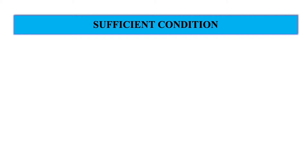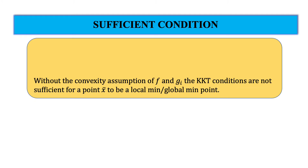Hello everyone, welcome back to the lecture series on constraint optimization problems. Till now we have seen what are the necessary and sufficient KKT optimal conditions to solve any inequality constraint optimization problem. We have seen that with KKT conditions there is a sufficient condition which says that if F and G1 are convex functions, then the point X bar is a local as well as global minimum.